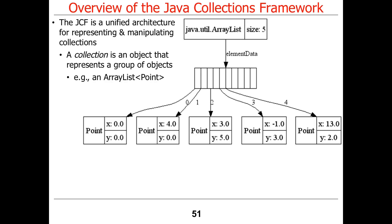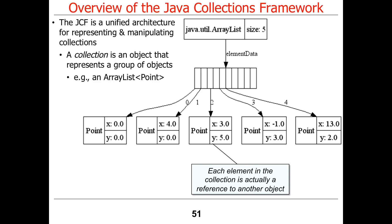Here's an example where we have an ArrayList of points. You can see that we have some number of points in there, and each of the points themselves is actually a reference to another object. The thing to remember about Java collections is that they work on user-defined types, not built-in types, and they have references to those objects stored inside the collection. That means there are typically two levels: you have to create the collection, and then allocate the elements and store them into the collection via various methods.